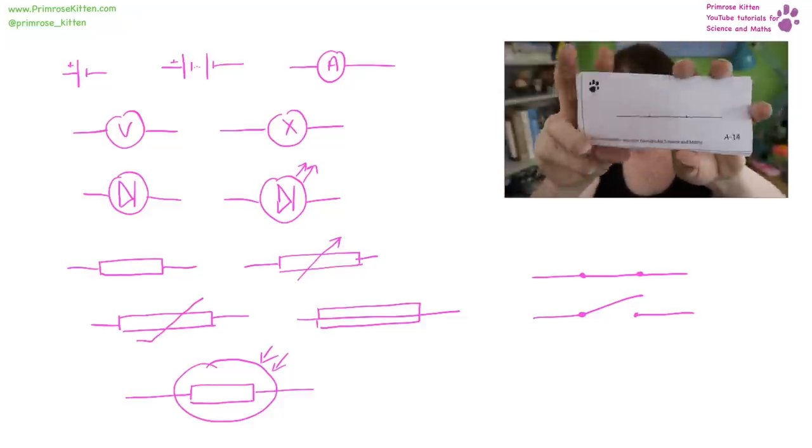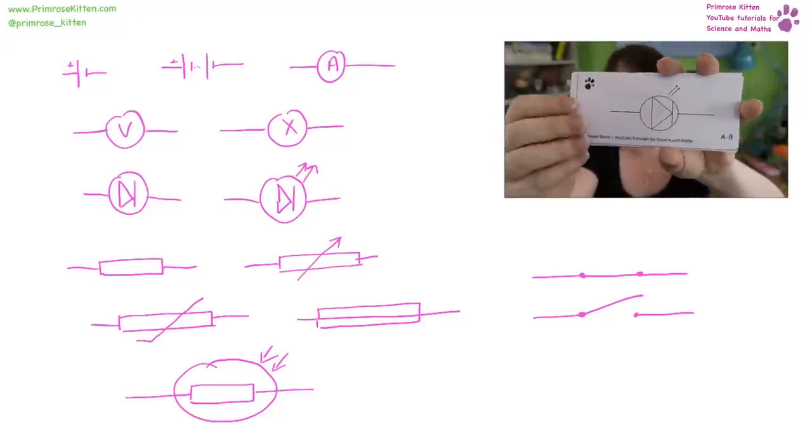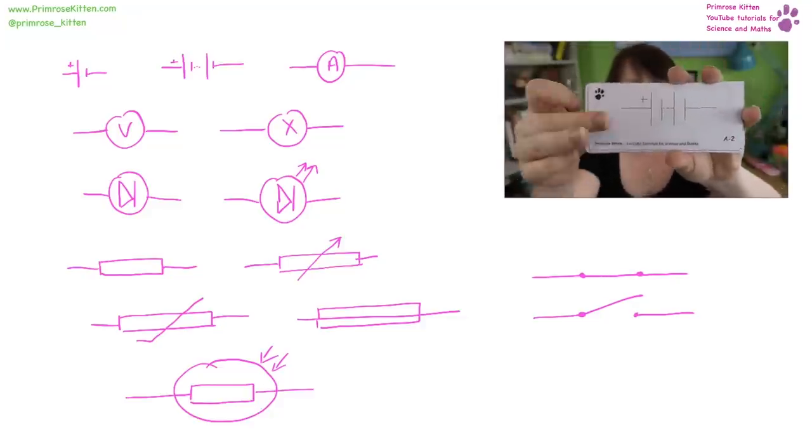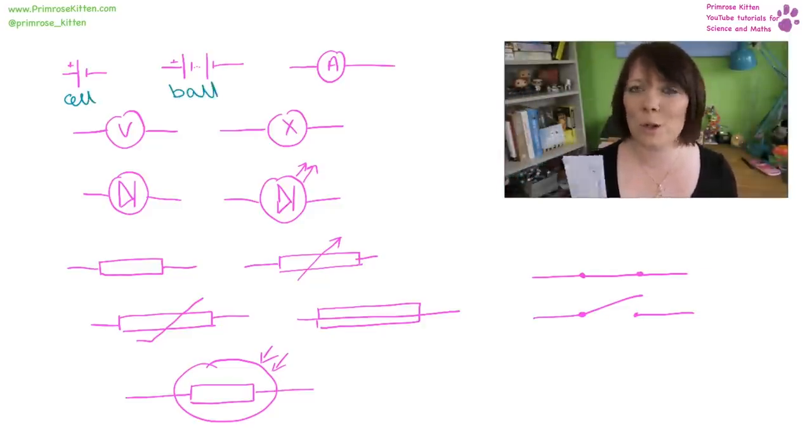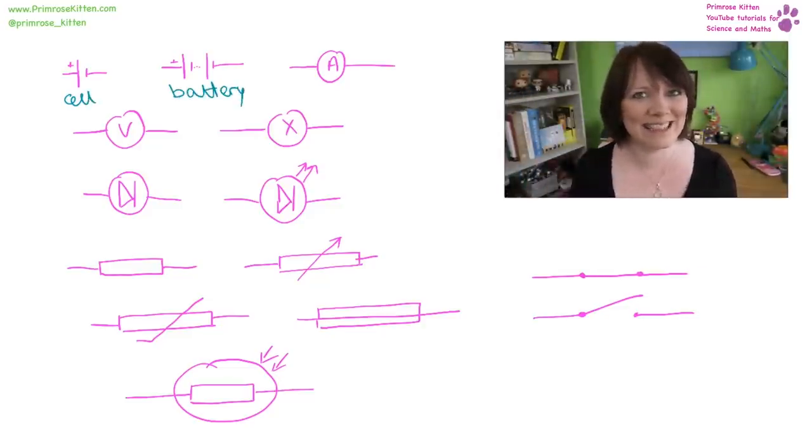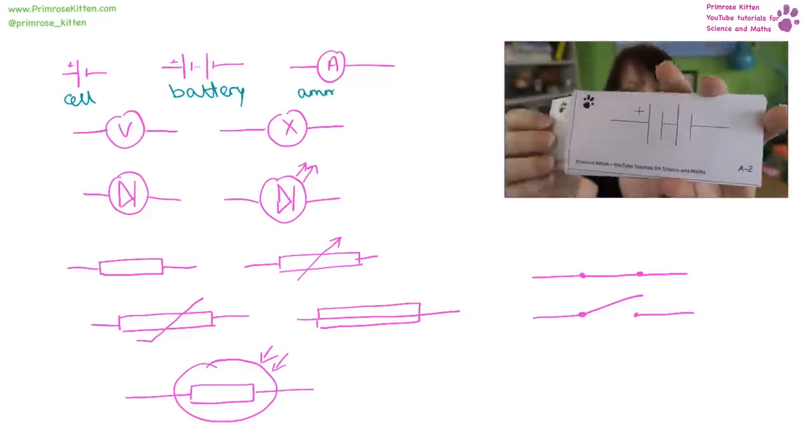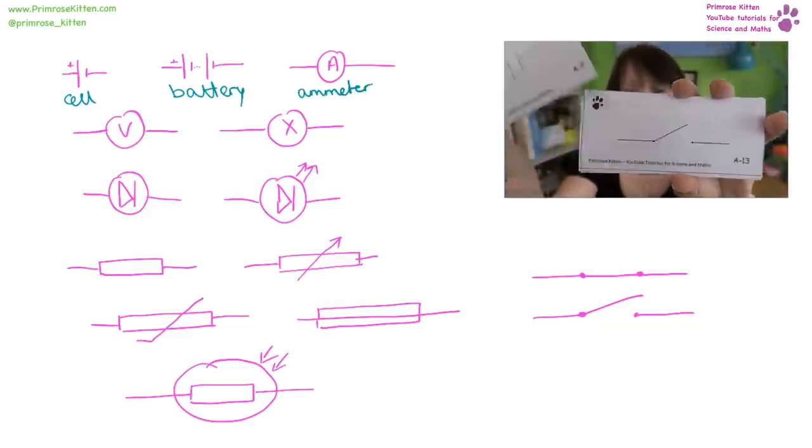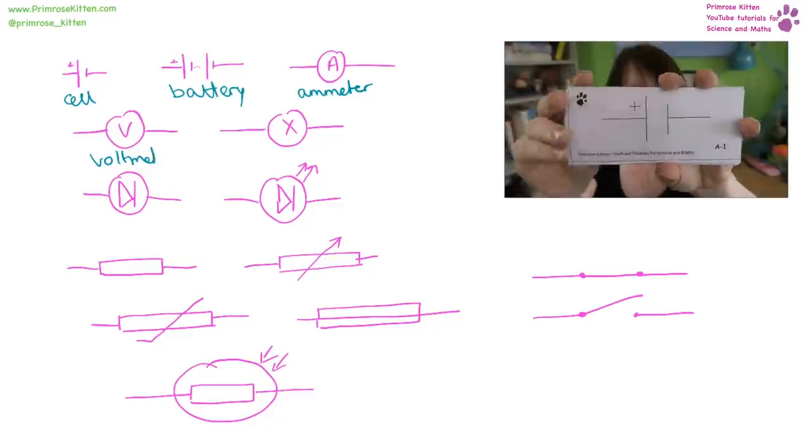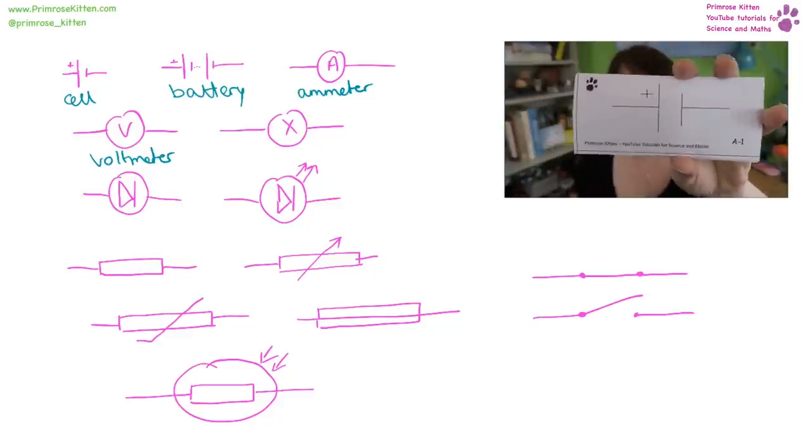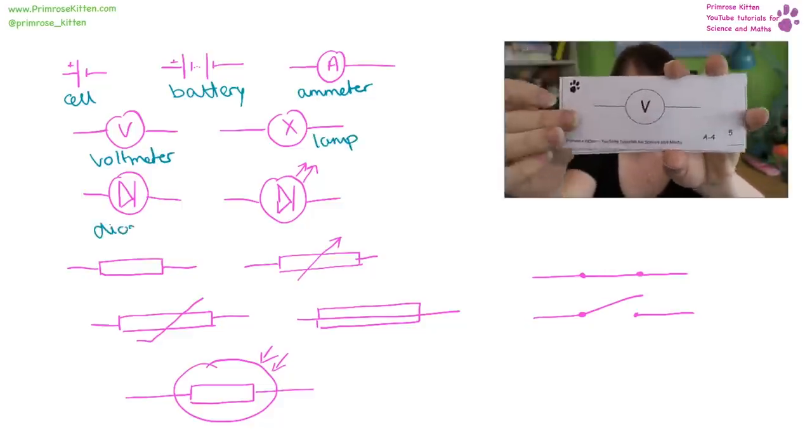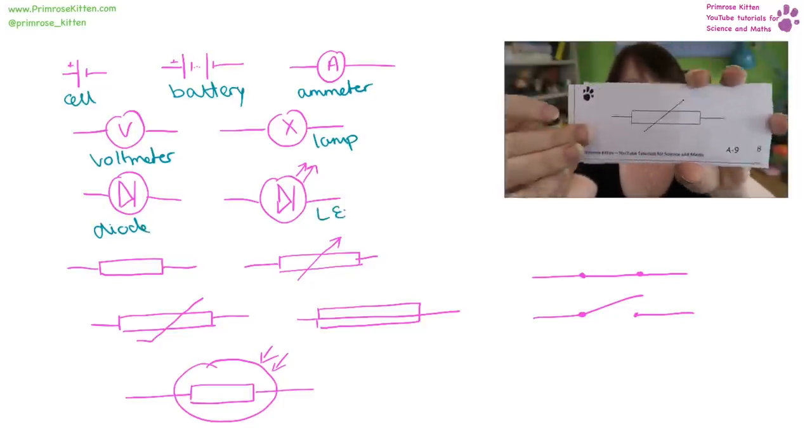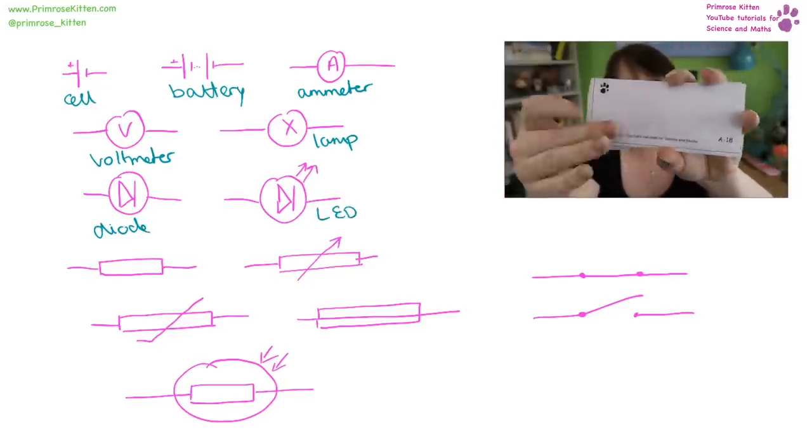You need to know all of these circuit symbols. I've made you handy flashcards for this, but here is a quick recap. This is a cell. This is a battery. You will notice that a battery is more than one cell put together. Here we have an ammeter, voltmeter, a lamp or a bulb, diode, an LED light emitting diode, resistor.